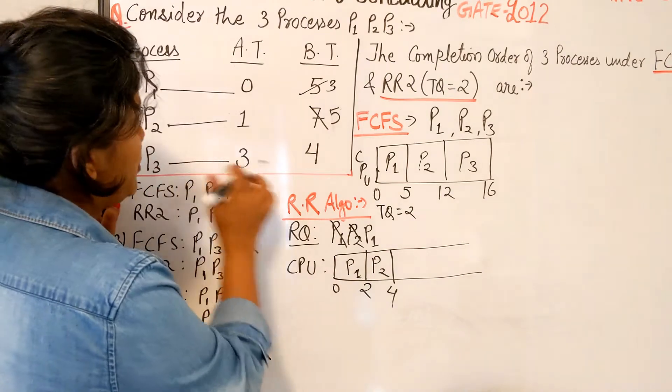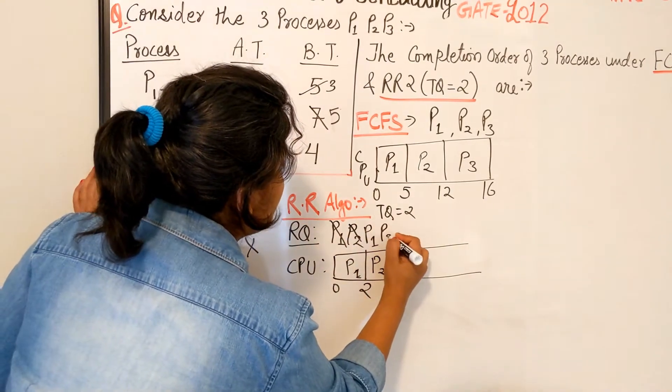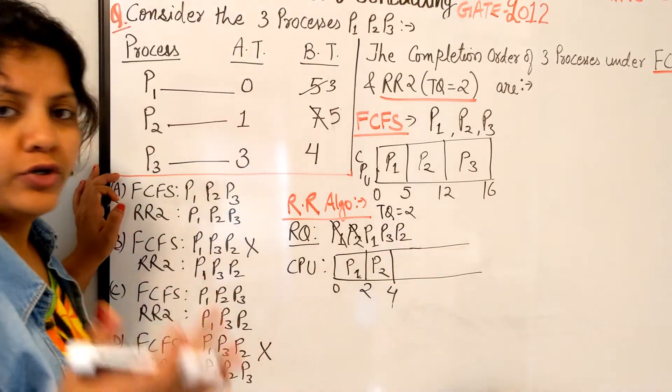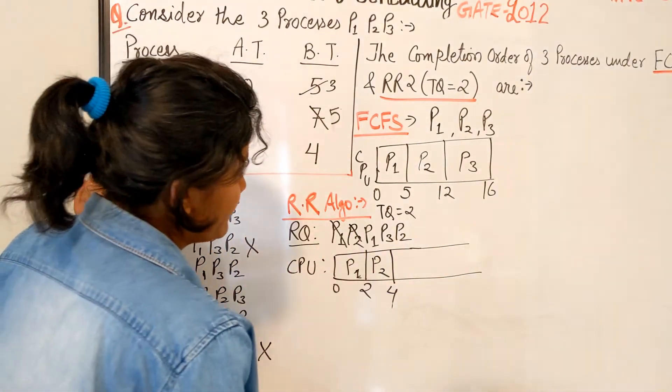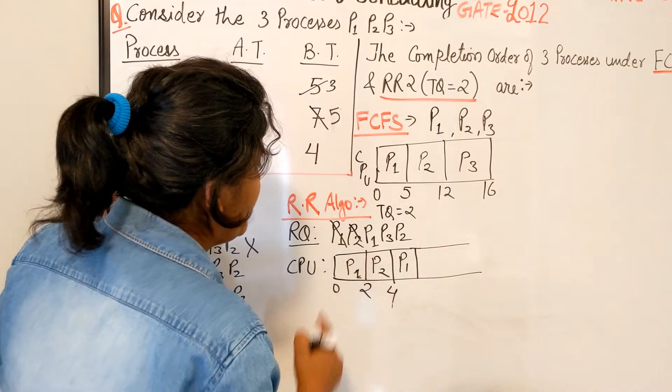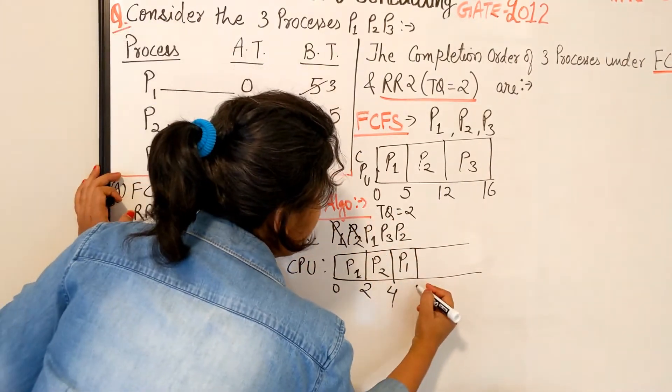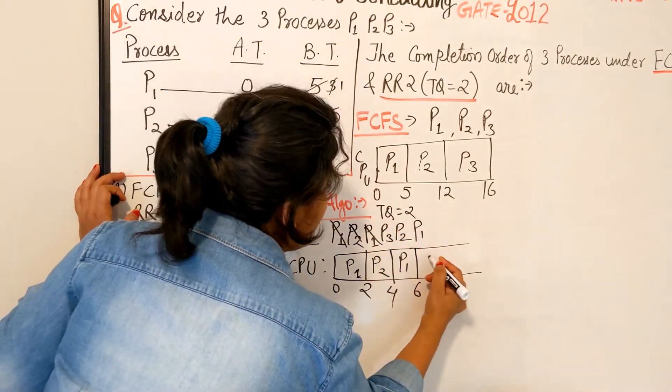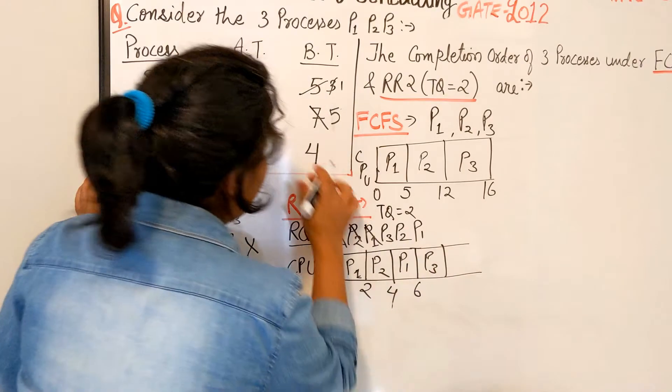By time 4 we got P3 also, so P3 comes in the queue and P2 needs more so it goes at the end of the queue. You all have done it so many times. Now we have all three processes. P1 needs 3, so 4 plus 2 equals 6, needs one more. P3 needs 4, becomes 2, so 6 plus 2 equals 8, needs more.